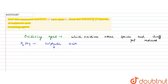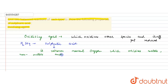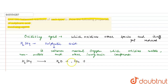Sulfuric acid releases nascent oxygen which oxidizes metals, non-metals and other inorganic compounds. This reaction can be written as: H2SO4 forms H2O, SO2, and nascent oxygen is released. This oxygen atom is known as nascent oxygen.